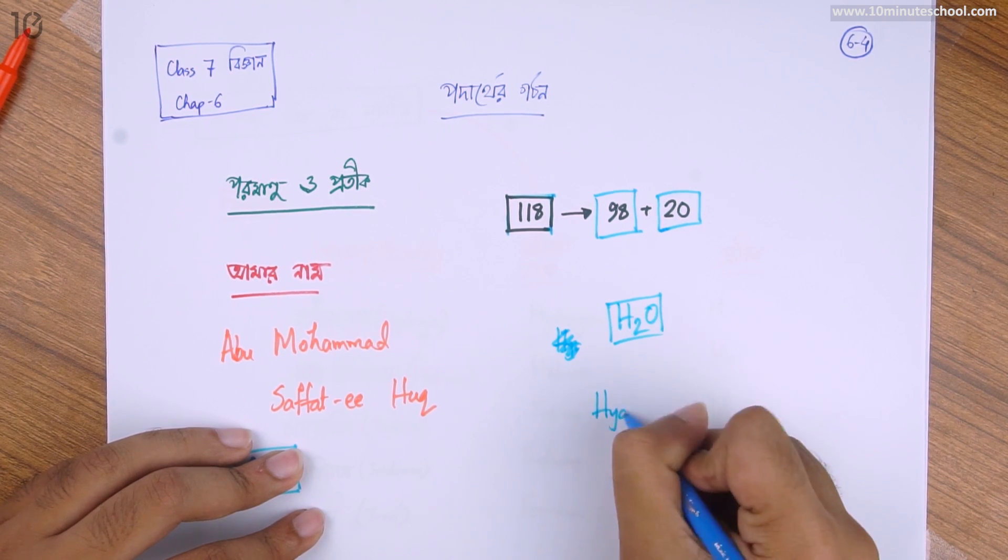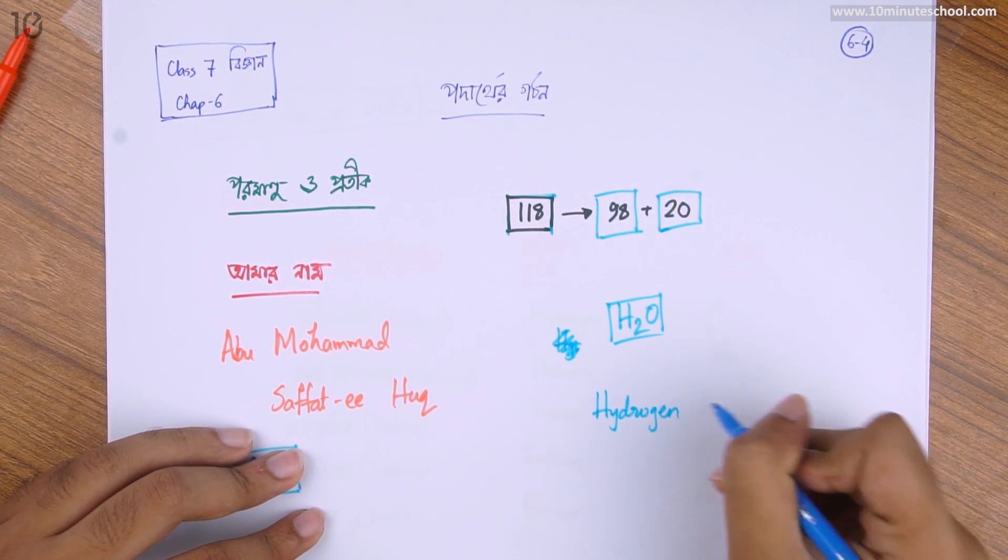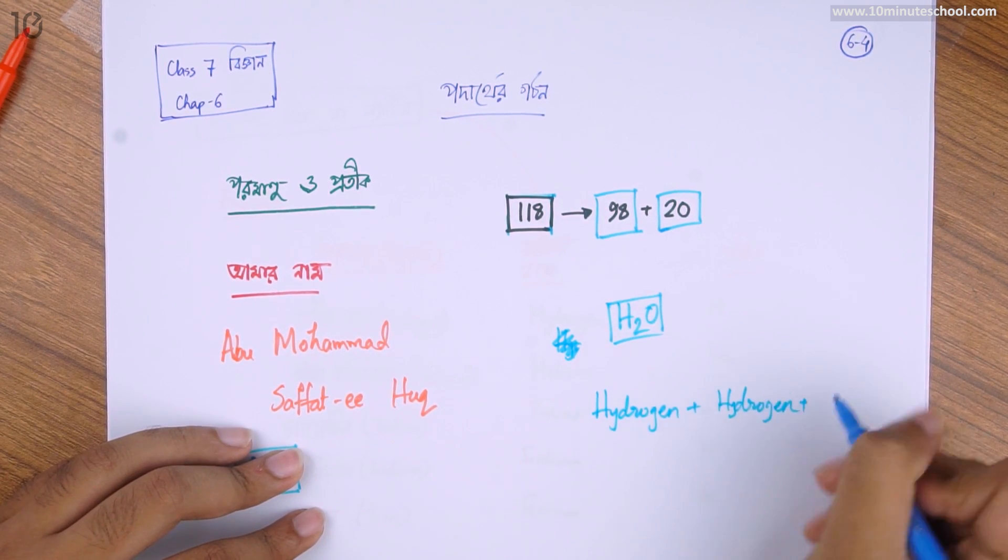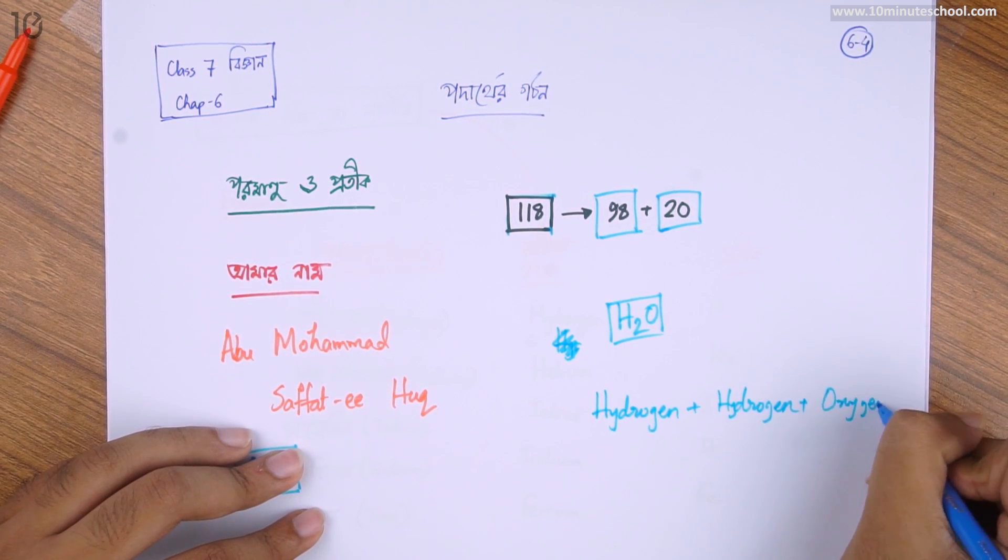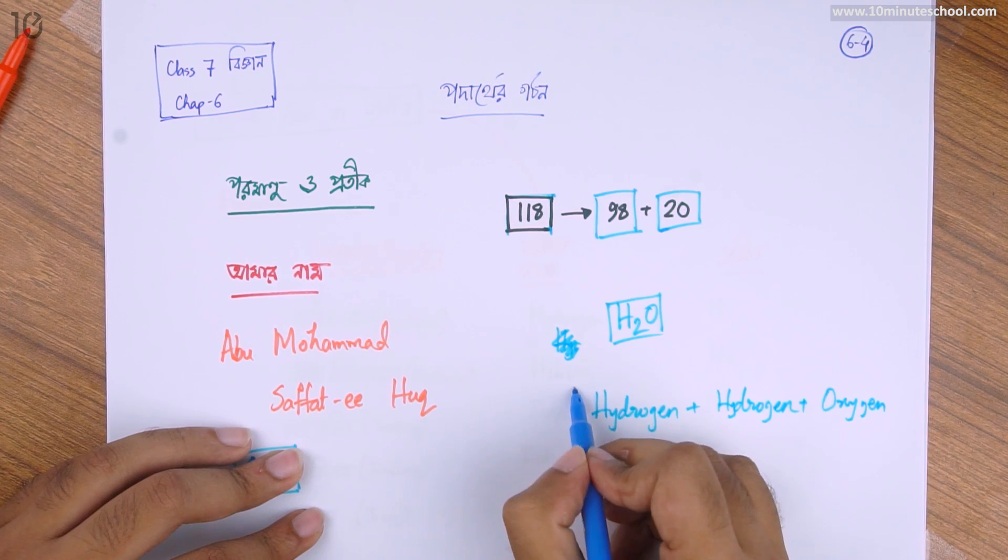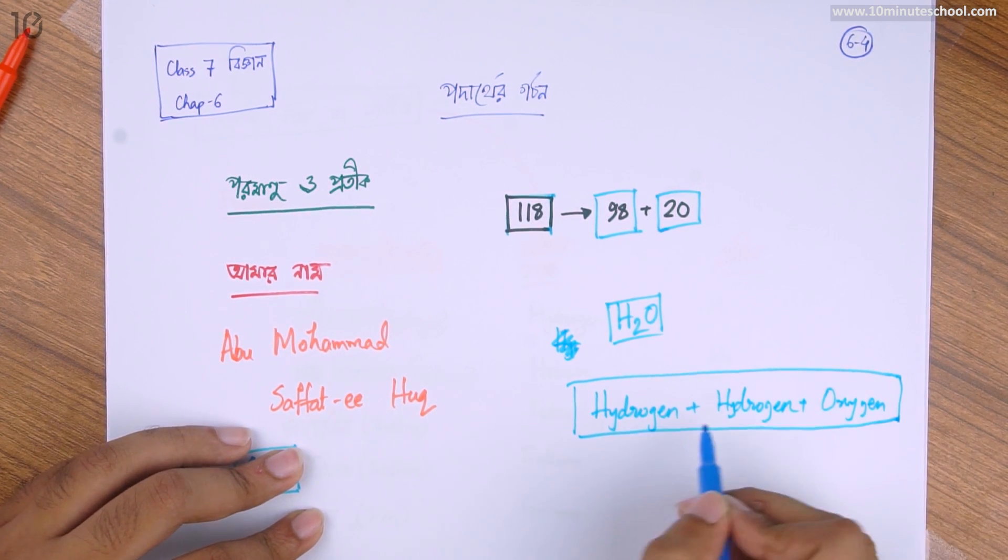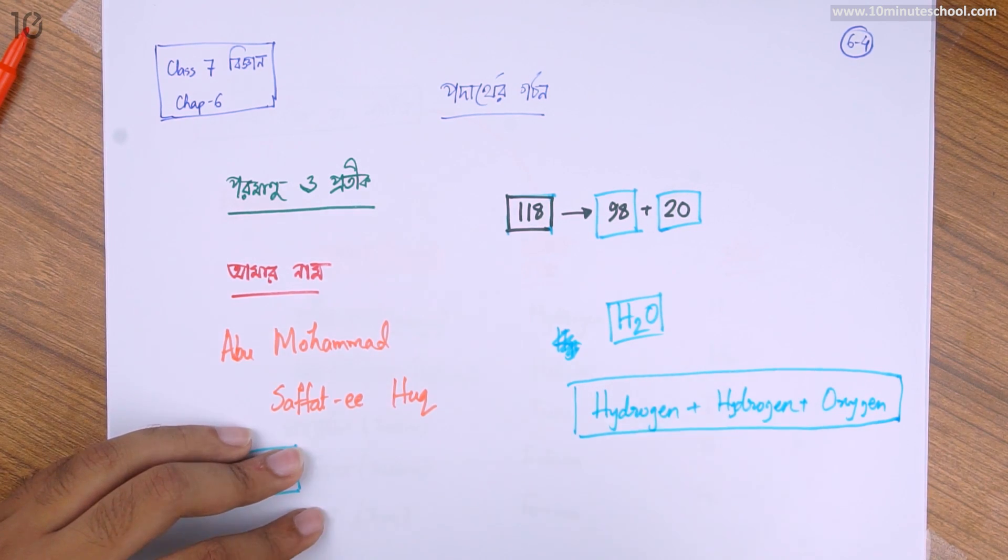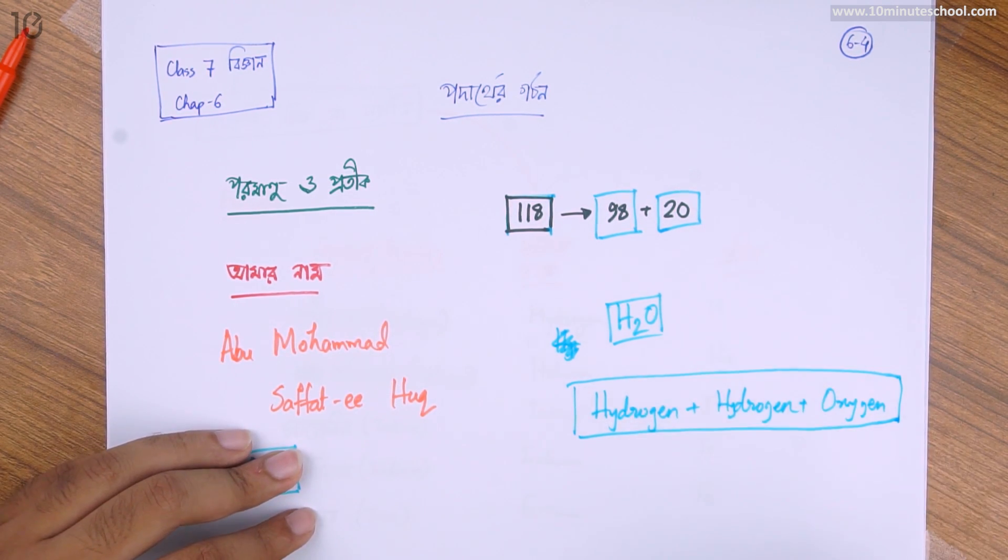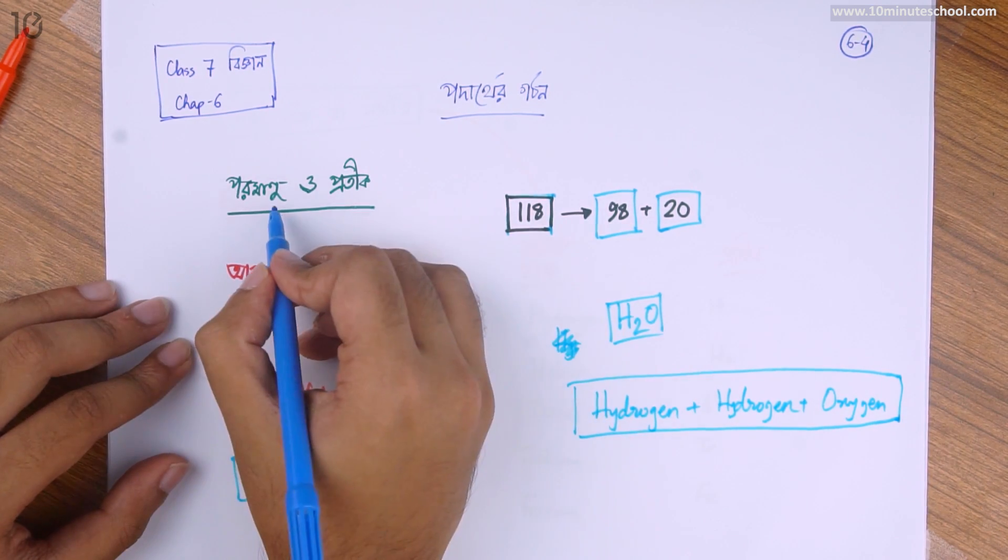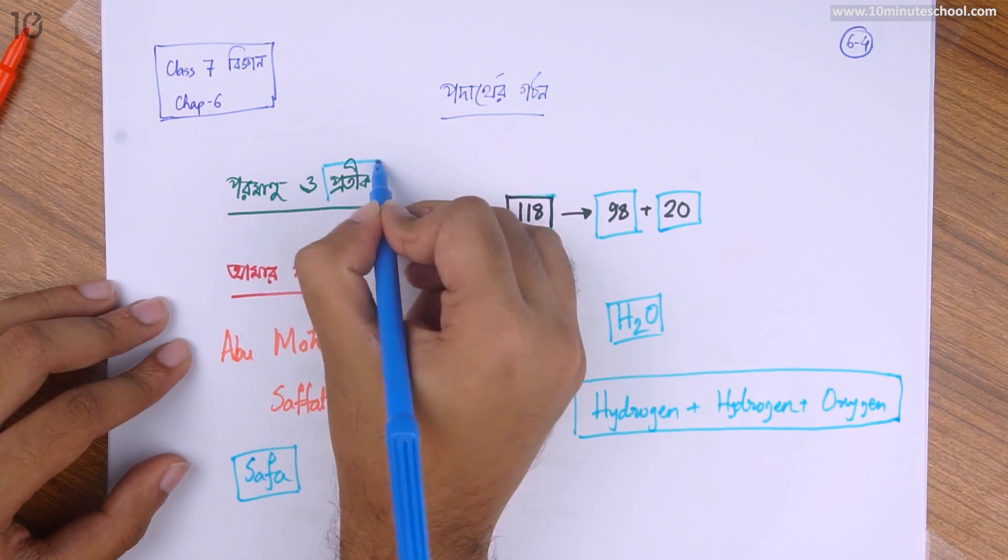So how do we write it? Hydrogen plus hydrogen plus oxygen. So when we write water: two hydrogen, one oxygen. H2O. How do we write it? This is what we write very often.